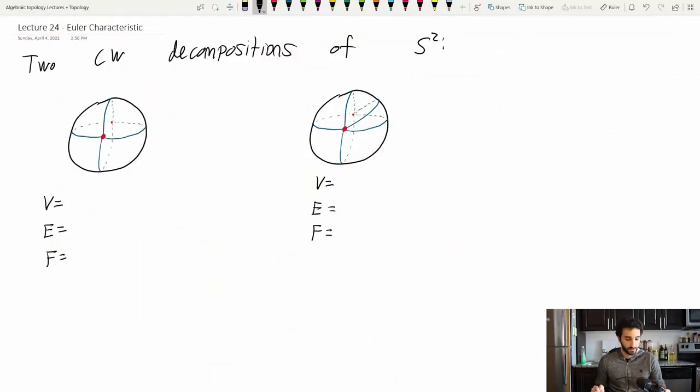So let's discover this invariant sort of naturally. Here are two CW decompositions of the sphere. Let's see how many edges, vertices, and faces this has. Well in this first one I see two vertices, the one in the front and the back. I see four edges and I also have four faces right over here.